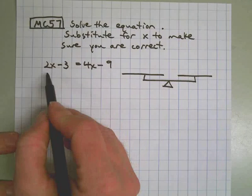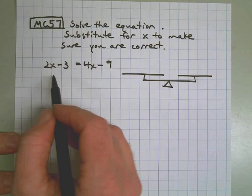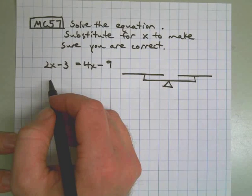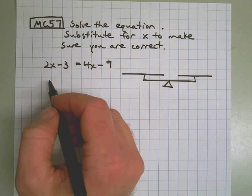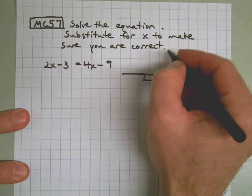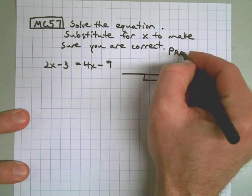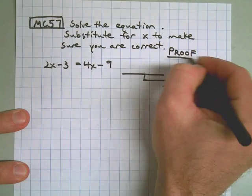Okay, we start off with an equation here. This is MC57. It says solve the equation, substitute for x to make sure you are correct. Remember, that's called the proof. Important word for you to learn for next year.